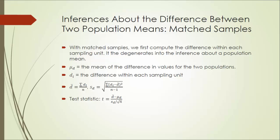And here we are going to describe a procedure to deal with paired samples or matched samples. With matched samples, we first compute the difference within each sampling unit. Then, this process degenerates into the inference about one population mean. Let's call mu_d the mean of the difference in values for the two populations. Di is the difference within each sampling unit.